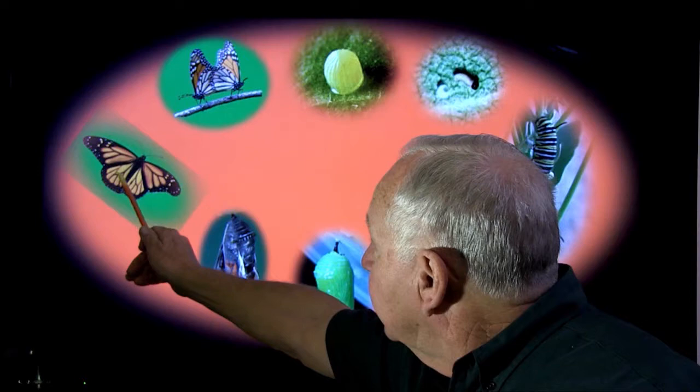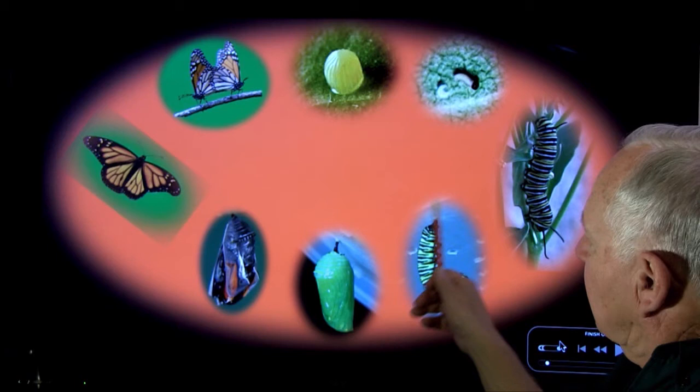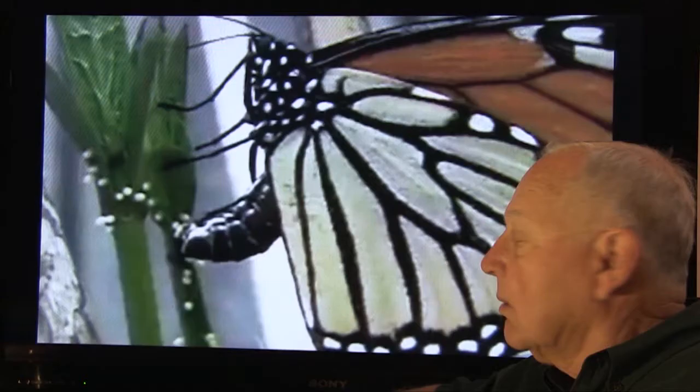Life cycle summary: adult, egg, larval stage the caterpillar, pupal stage the chrysalis, then back to the adult again.